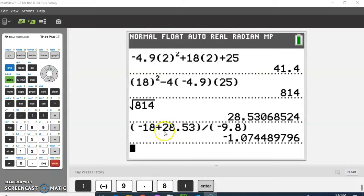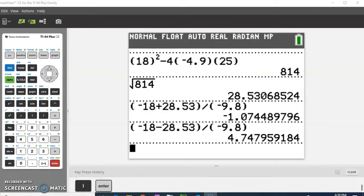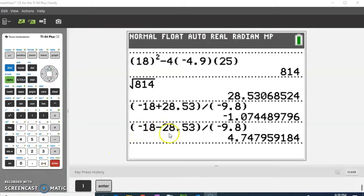All right, so I want you to notice that in the calculator, I had to put my numerator in parentheses and my denominator in parentheses. Otherwise, the calculator would have divided this and then added the negative 18 because that's order of operations is division before addition. So you have to protect this with parentheses, then divide by the negative 9.8. Since we were rounding to two decimal places, we'll keep doing that. So one of my answers is negative 1.07, and then I'm going to find my other one using the calculator. All right, and notice again, I protected the negative 18 minus the 28.53 with parentheses divided by negative 9.8, and we'll say that's 4.7.